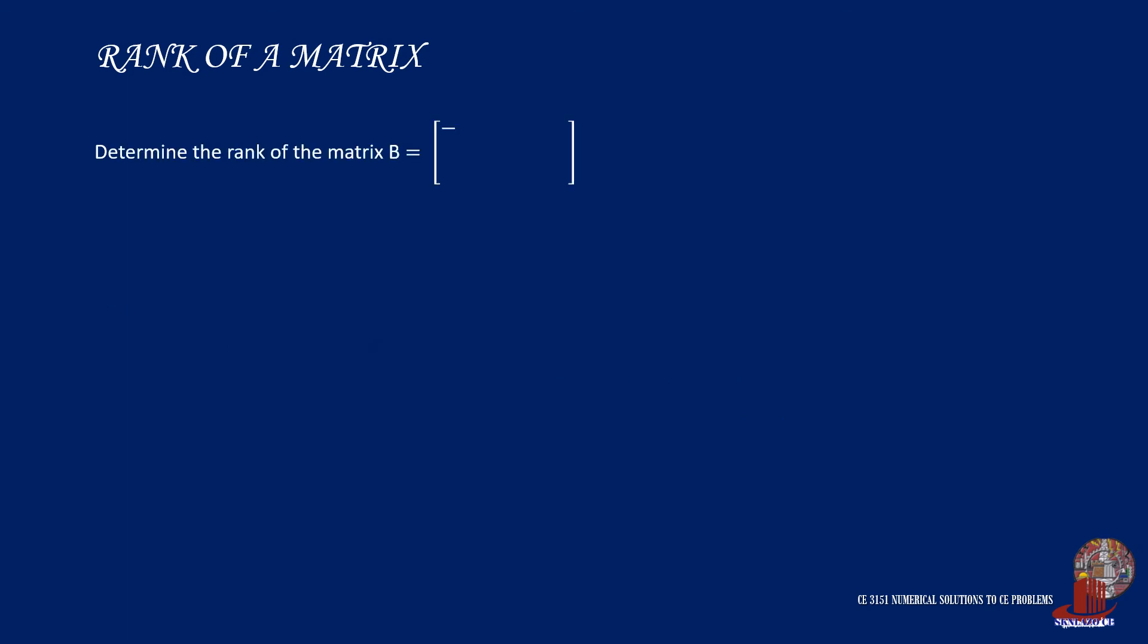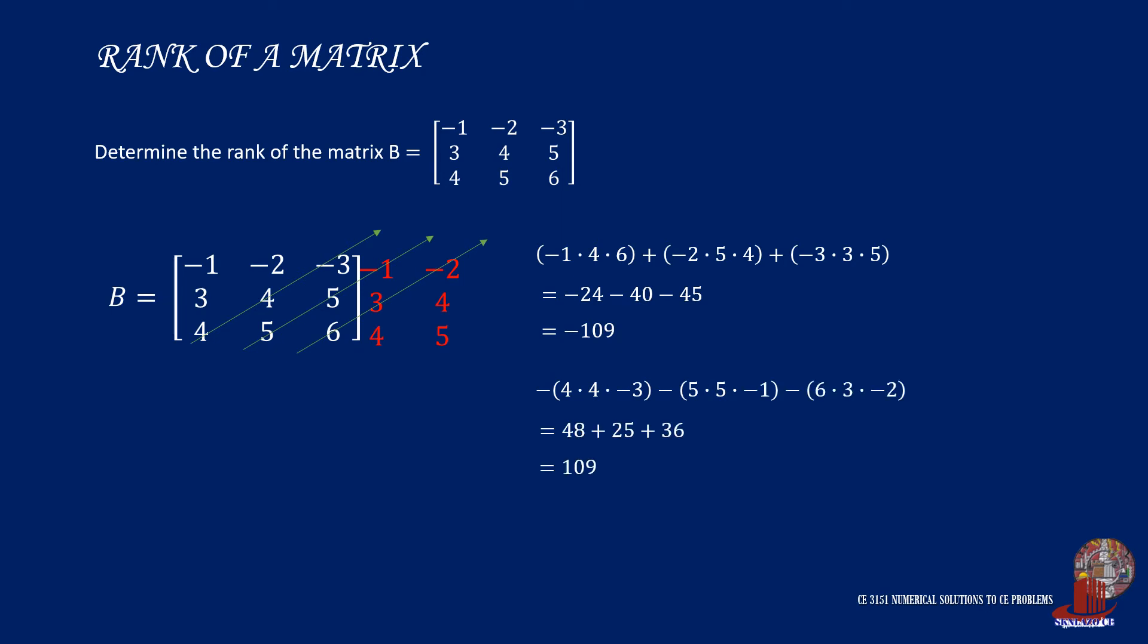Again, determine the rank of matrix B with the following elements. By using Cyrus method, we can determine the positives as negative 109. The negatives will be determined as well given the value of positive 109. So, we can say that the determinant of matrix B is negative 109 plus 109 yielding zero. So, matrix B is singular.